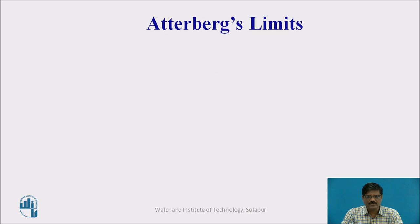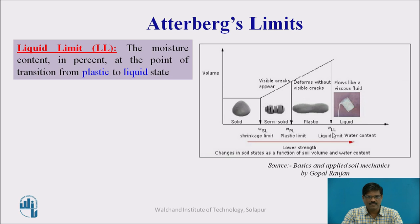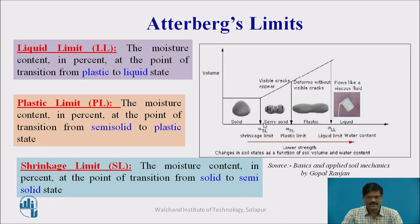Let us take a quick review of the Atterberg limits, which we already discussed in the earlier presentations. With the help of this sketch, we can very easily define the various Atterberg limits as shown here. The first one is liquid limit, second one is plastic limit, and third one is shrinkage limit. Now, with respect to these Atterberg limits, we have to define various indices of consistency.